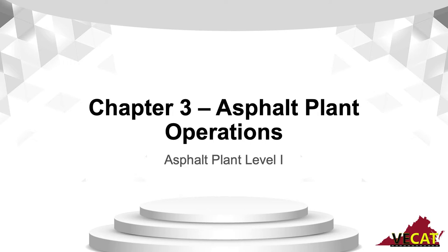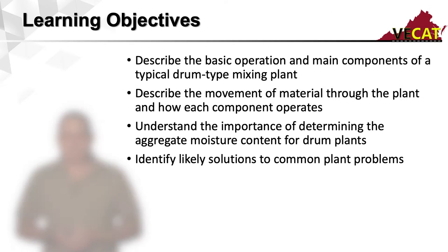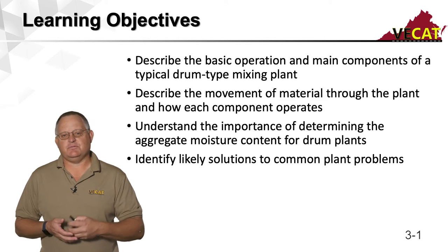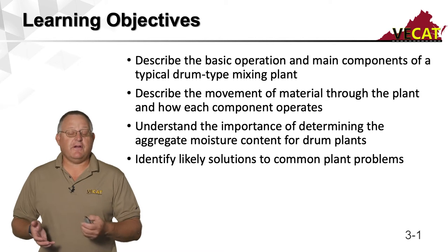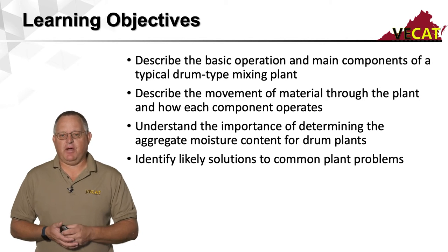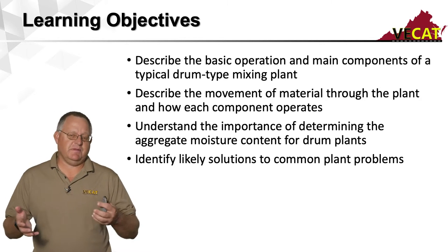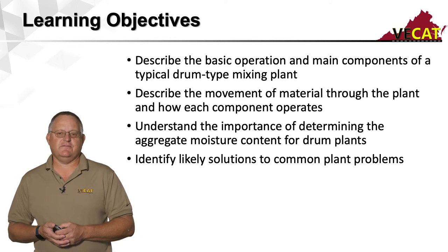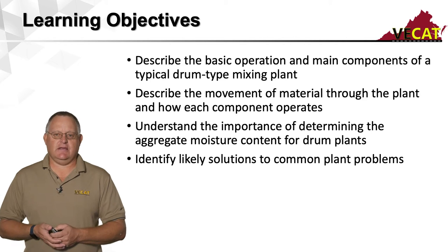Hello, I'm Trent Clark with the Virginia Asphalt Association. Welcome to this asphalt plant level one class. We are now in chapter three, asphalt plant operations. One of our learning objectives is to cover the basic operations and main components of a drum plant. We'll spend most of our time on drum plants because that is the most common one in use in Virginia for high production on VDOT jobs.